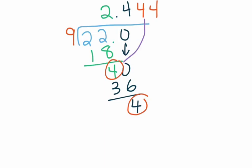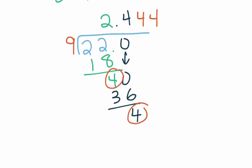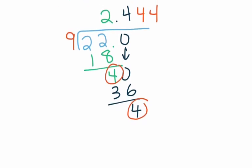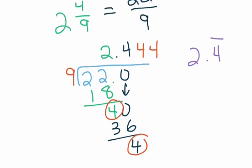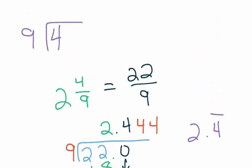So, instead of just writing a whole bunch of 4s behind that 2, instead of what we're going to do is we're going to use the repeater bar. So, instead of 2.44444, so on forever, we're going to say 2.4 with a repeater bar over the 4. That tells us that the 4 repeats and then it goes on forever.